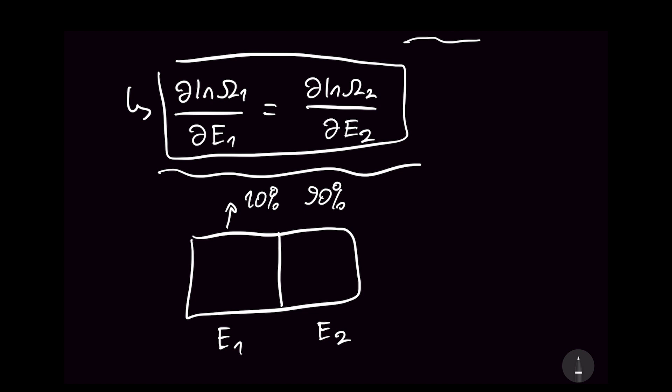So this equation up here is trying to tell us that. And since it is so important, we define a mathematical symbol for these, beta. We just label them. So ∂ln(omega_1)/∂E1 is called beta_1. Beta_1 equals beta_2 is what is required for thermal equilibrium.